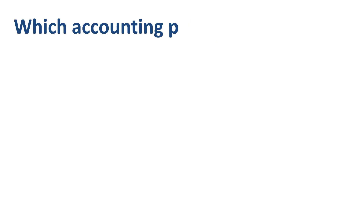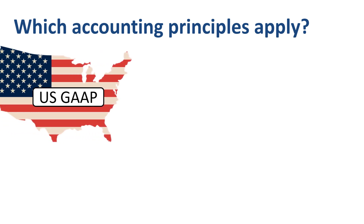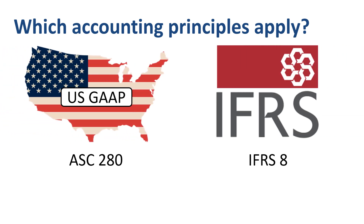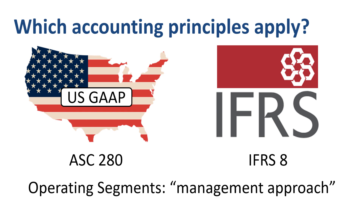What are the accounting principles and rules that regulate segment reporting? Under US Generally Accepted Accounting Principles, ASC 280 is the place to go. Under International Financial Reporting Standards, IFRS 8. These standards are largely converged — in other words, they treat the topic roughly the same. Both standards are based on a management approach to identifying and measuring the financial performance of an entity's operating segments. Reported segment information will be based on the information used internally by management.